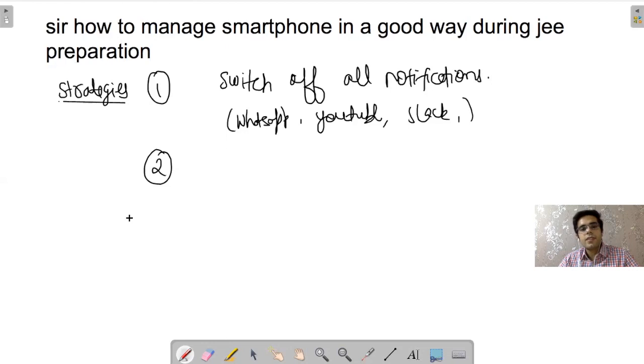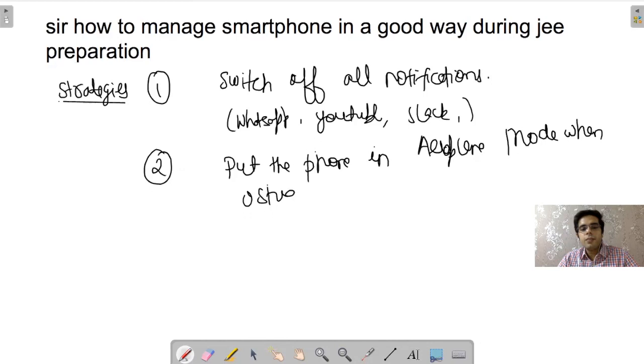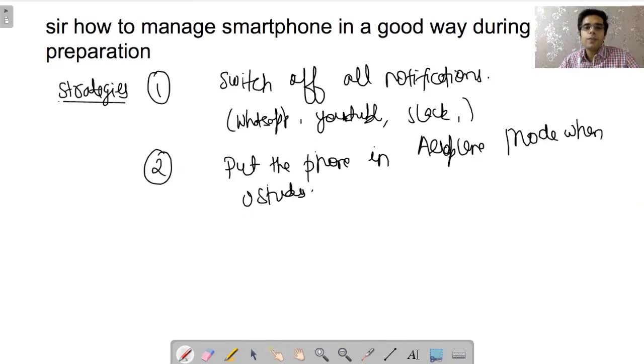Second step is put the phone in airplane mode when you are studying. When it is in airplane mode, net will not work, calls will not come. If you are going outside then definitely not in airplane mode because your parents might call you. But if you are inside home in your room and phone is there, put the phone in airplane mode or you can switch it off.